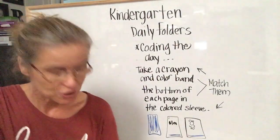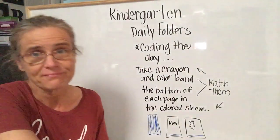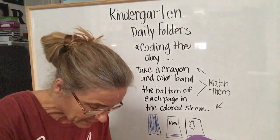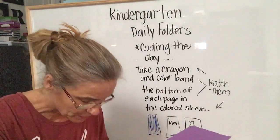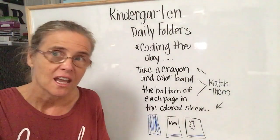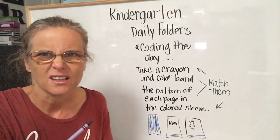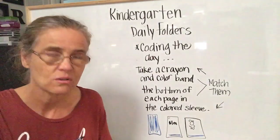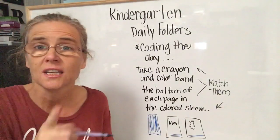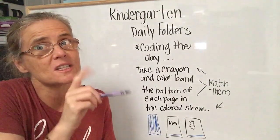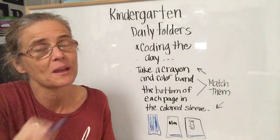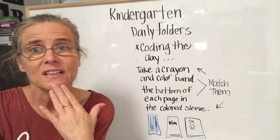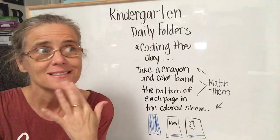Don't just do the green — here I have the purple, and I want to make sure I color band the purple too. And the yellow and the blue and the orange. You might not have your orange papers yet, but once they come, color band them too.